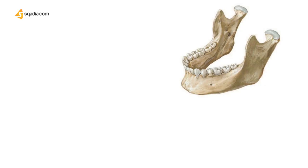Let's discuss the outer surface first. Moving away from your chin, we have the symphysis menti — the line at which the right and left halves of the bone meet each other, marked by a faint ridge. Mentum is terminology used for chin, and symphysis indicates the fusion of these two bones, which were initially separate.